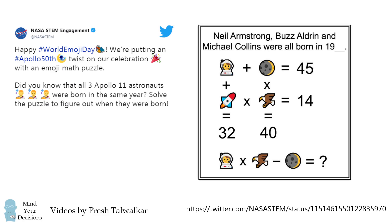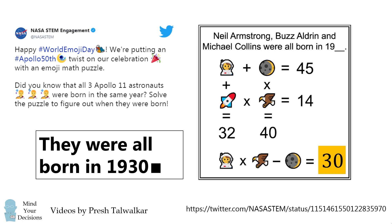So we go back to the puzzle, and we get the answer of 30, which means all three astronauts were born in 1930. This is a great puzzle, and it'll also help people remember which year Neil Armstrong, Buzz Aldrin, and Michael Collins were born in. Thanks NASA for sharing this fun emoji math puzzle.